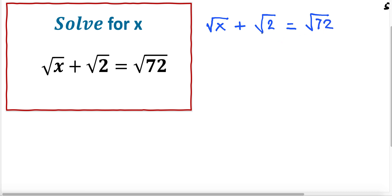First of all, I will put the numbers on one side and the variable on the other, so I'm going to subtract the square root of 2 from both sides. These two cancel, and what do we have? We have the square root of x is equal to the square root of 72 minus the square root of 2.